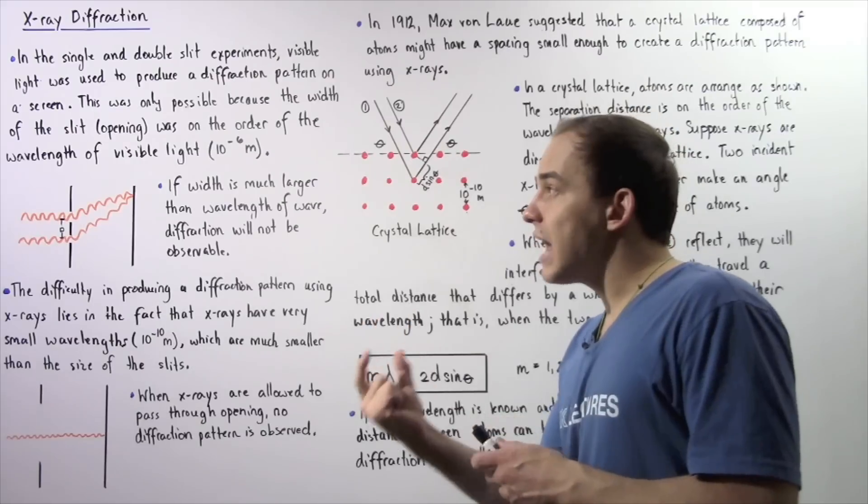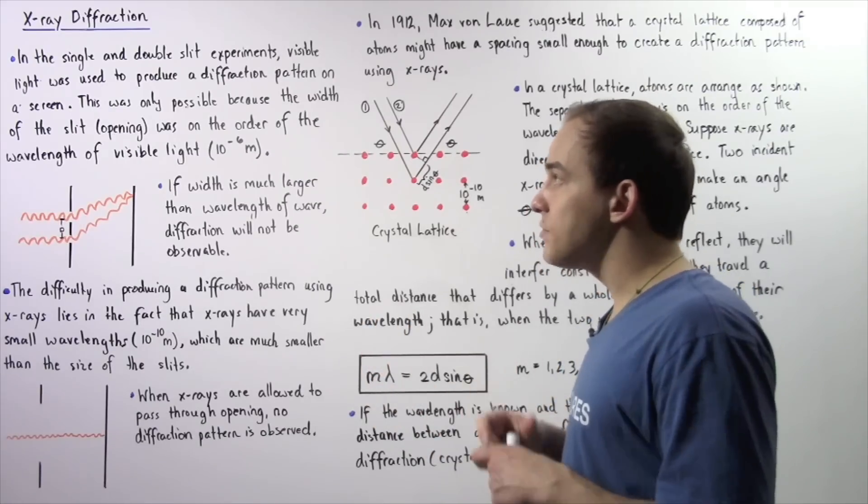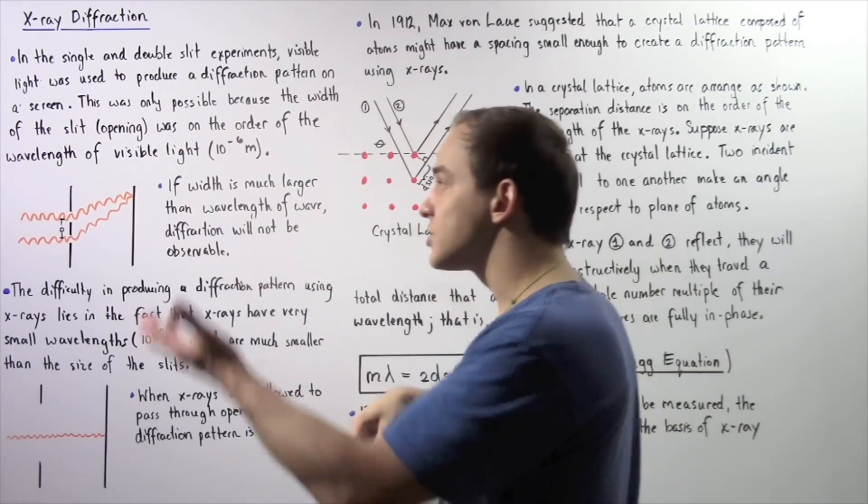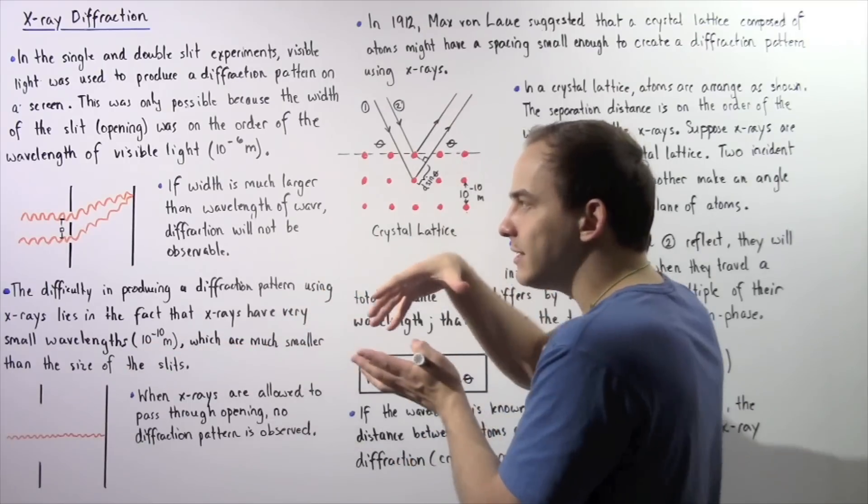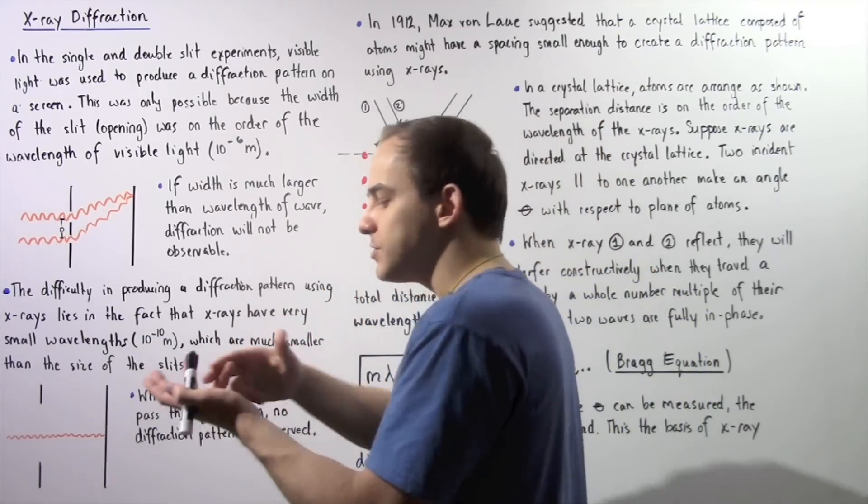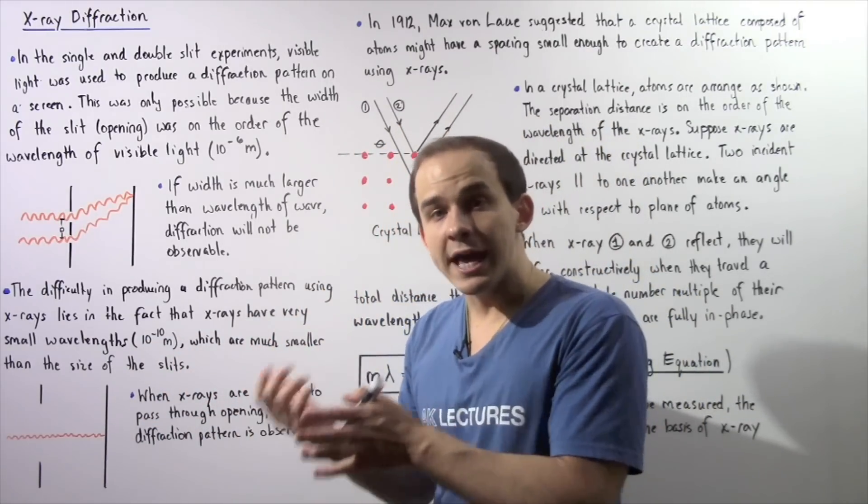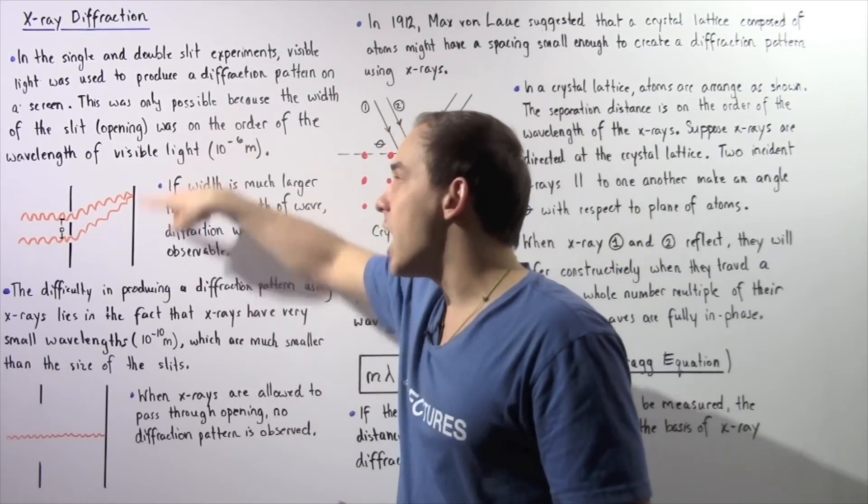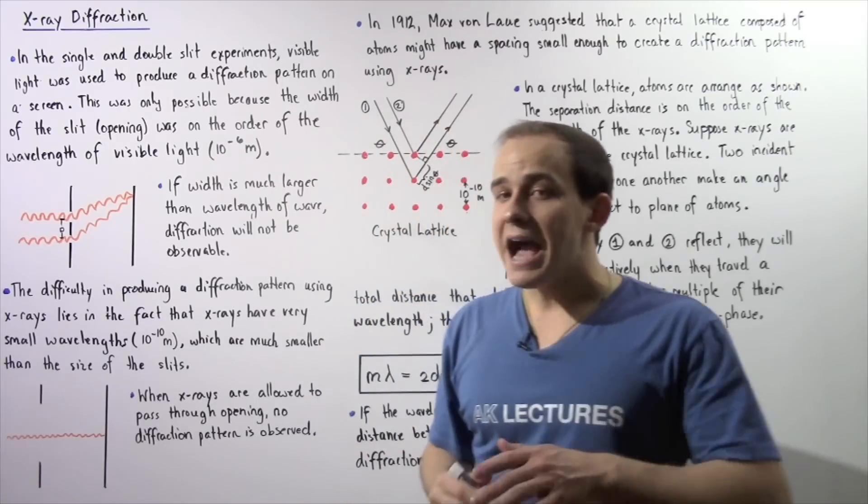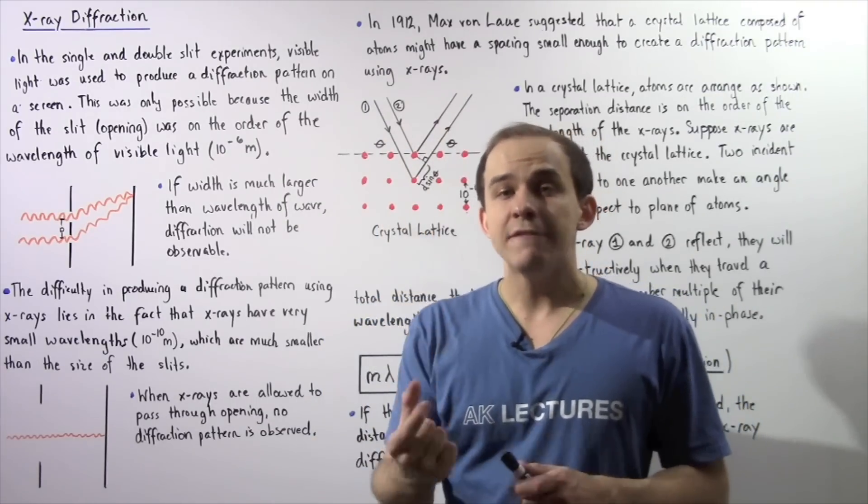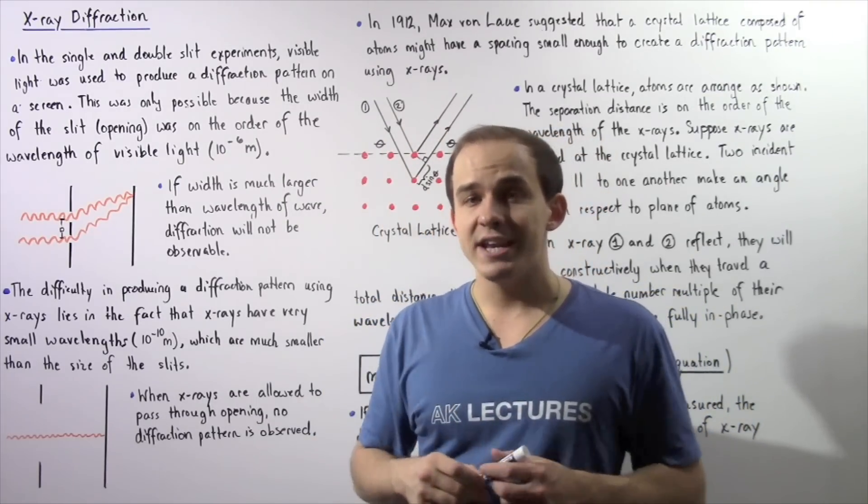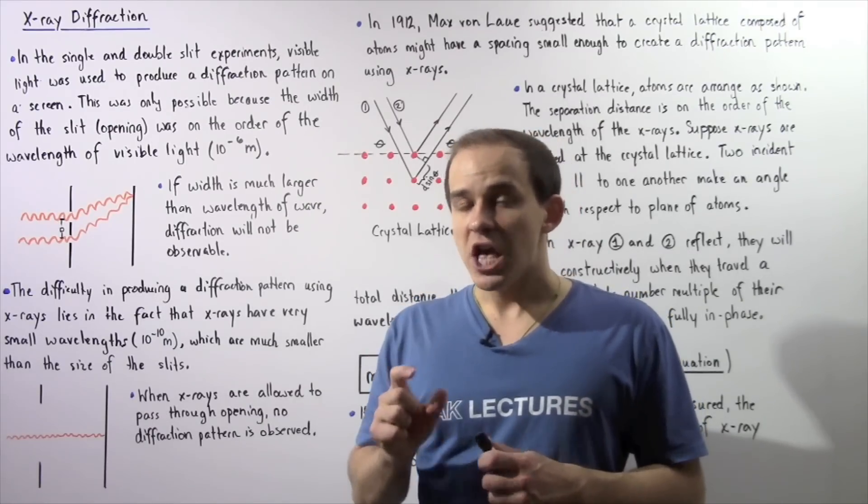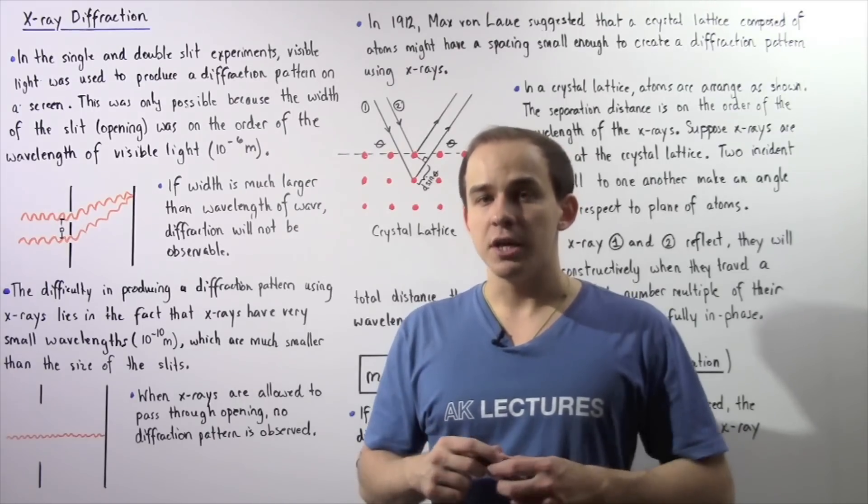Basically, because the size of the openings was about the same as the wavelength of visible light, when the rays of light passed through those openings, they diffracted and interfered constructively and destructively. That led to the diffraction pattern, the bright and dark fringes formed on the screen. If the wavelength of electromagnetic radiation is much smaller than the size of the openings, then no diffraction pattern is actually observed.